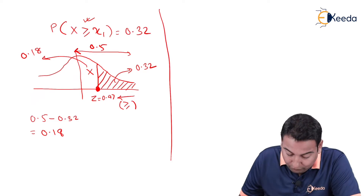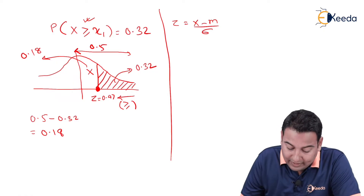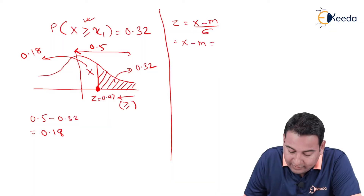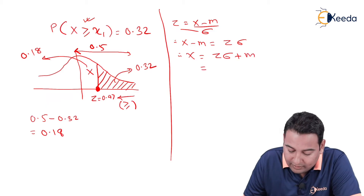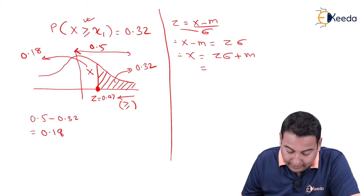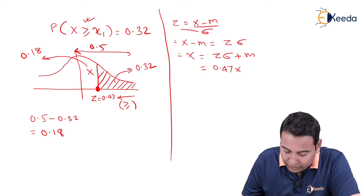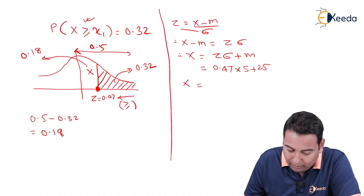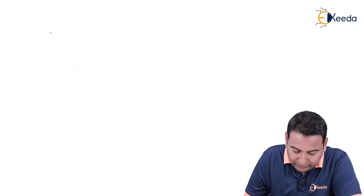I actually want x. The formula for z is z = (x − m) / σ, so rearranging gives x = zσ + m. Substituting the values: z is 0.47, sigma is 5, and mean is 25. Therefore x1 = 0.47 × 5 + 25 = 27.35 + 25... which simplifies to 27.82. This is the first answer.